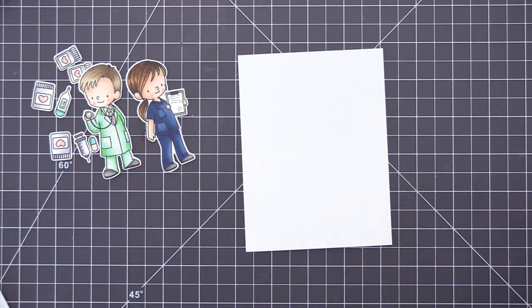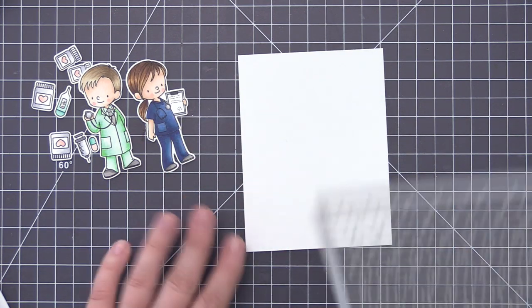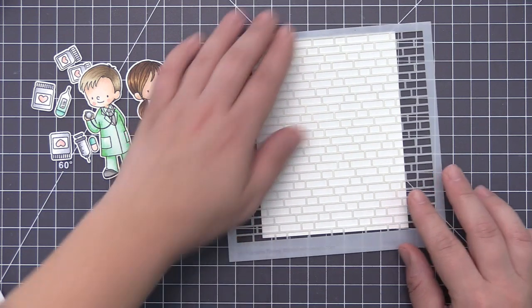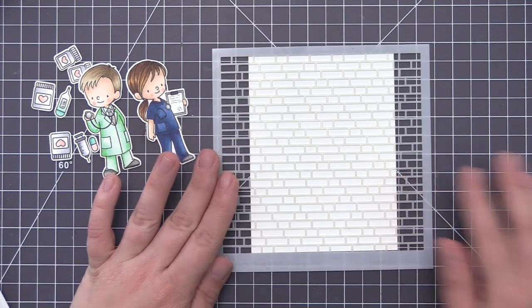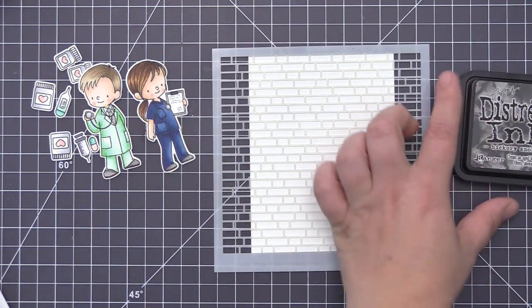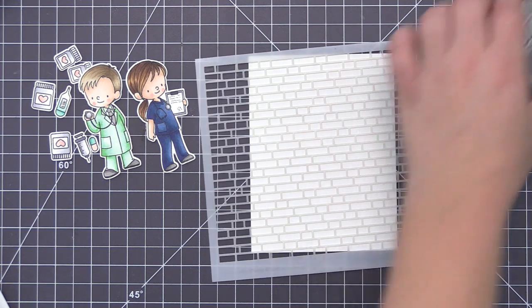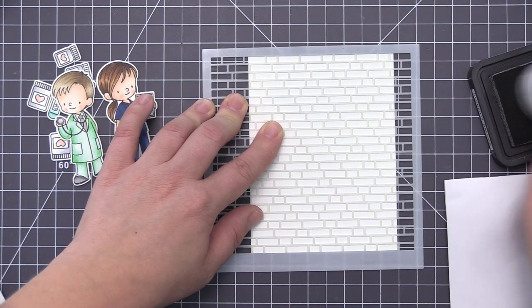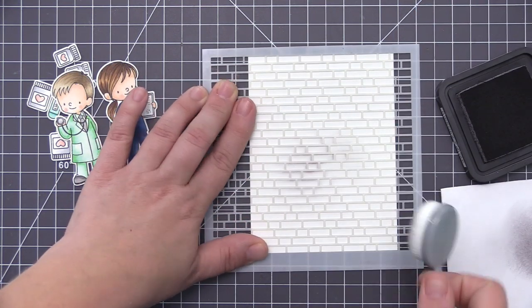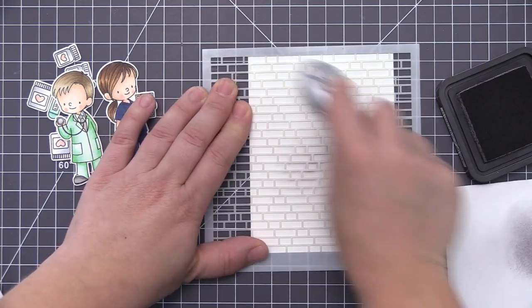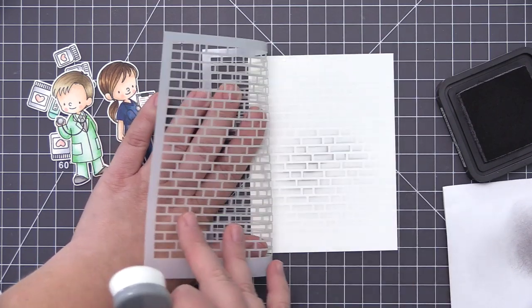The idea I had in my head when I started this was I wanted to put some brick detail in the background to make it look like they were actually standing in a hospital. I have the English Brick Wall stencil and I'm just positioning that onto my panel here, which measures four inches by five and a quarter. I'm using some Hickory Smoke Distress Ink and a blending brush, just going right through that stencil.